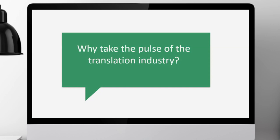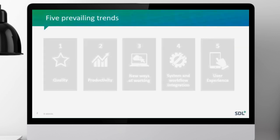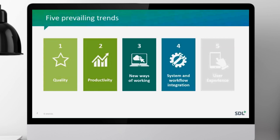Rather than have a lot of these ad hoc conversations, we wanted to put a little bit of science behind it and add some structure. This research was conducted to try and get a consensus of where people thought the industry is going — from every space in the industry, whether it's a corporation, enterprise, language service provider, or a freelancer. The result was that we saw five prevailing trends: quality, productivity, new ways of working, system and workflow integration, and user experience.